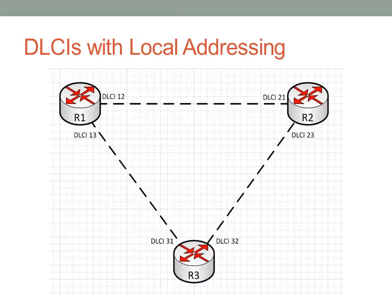Let's look at some DLCIs. R1 in the upper left has DLCI 12 on one interface and DLCI 13 on another. When router 1 sends traffic destined to router 3, it uses DLCI 13; when destined to router 2, it uses DLCI 12. Similarly, when router 2 wants to send traffic to router 1, it uses DLCI 21; to router 3, it uses DLCI 23. So the DLCI specifies your destination — it is a destination-based address, not a source address.